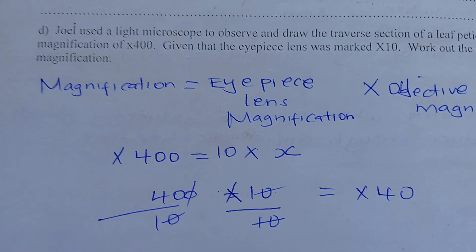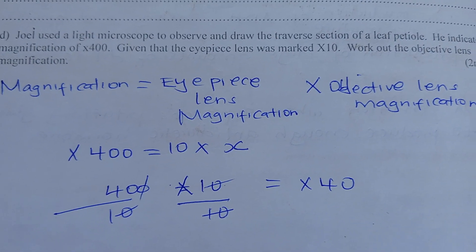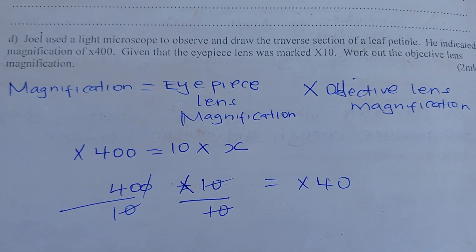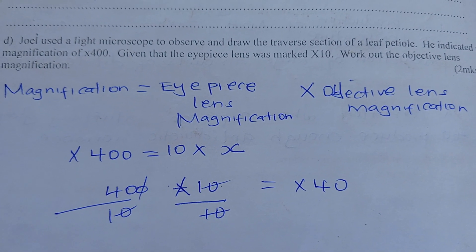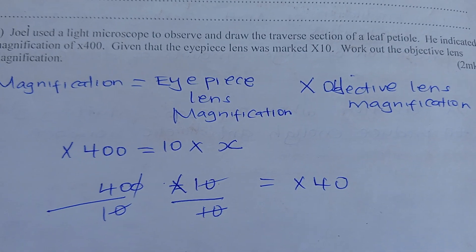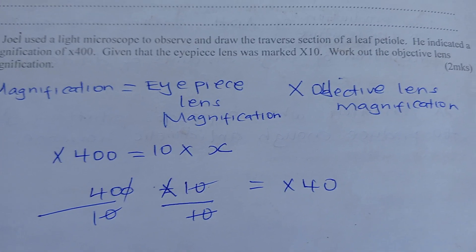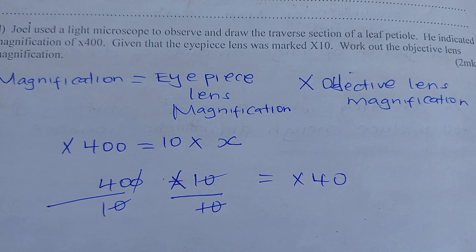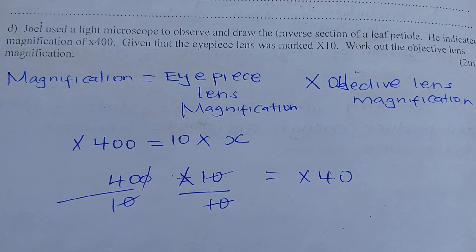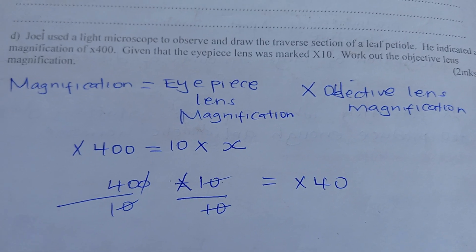Calculation of magnification. I used the light microscope to observe and draw the transverse section of a leaf petiole, indicated magnification ×400, given that the eyepiece was ×10. Work out the objective lens magnification. Using the formula: magnification = eyepiece lens magnification × objective lens magnification. So 400 = 10 × X, which gives X = ×40.